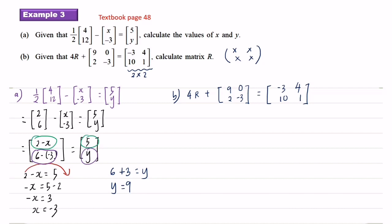First, I will move this matrix to the right-hand side. Opposite of plus is minus. So 4R equals negative 3, 4, 10, 1 minus 9, 0, 2, negative 3.